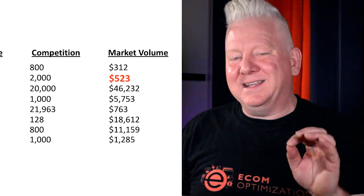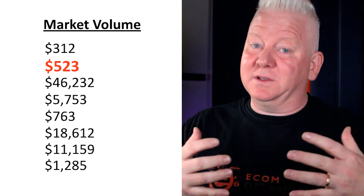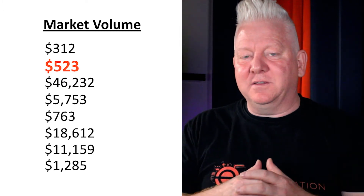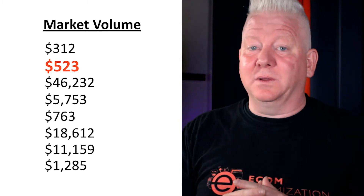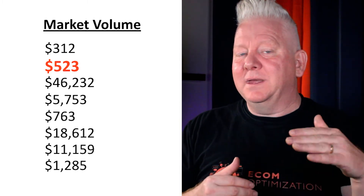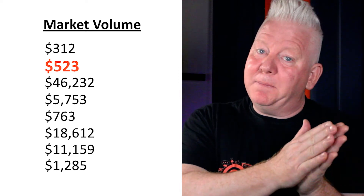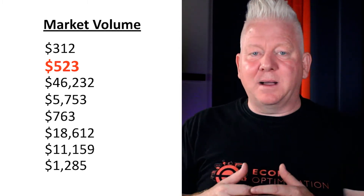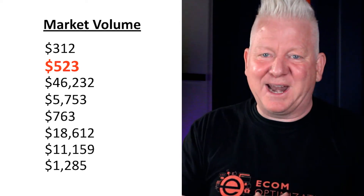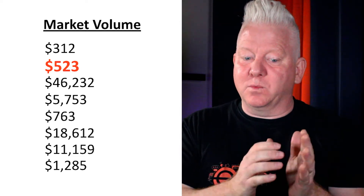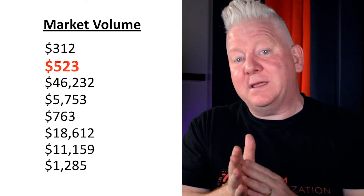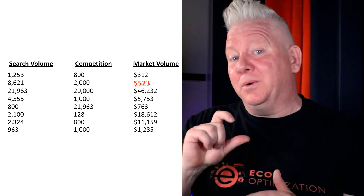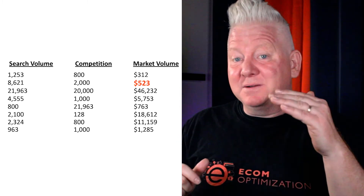The new piece of data that enters in is market volume. Market volume is really speaking to numbers of money — how much money is flowing through each one of these phrases. Most people don't realize this, even top sellers: each phrase you have options for has a certain amount of money passing through it every month. This is knowing how much money is flowing through the top 15 listings on page one of Amazon for that phrase. Not all phrases are equal when it comes to that amount of money.